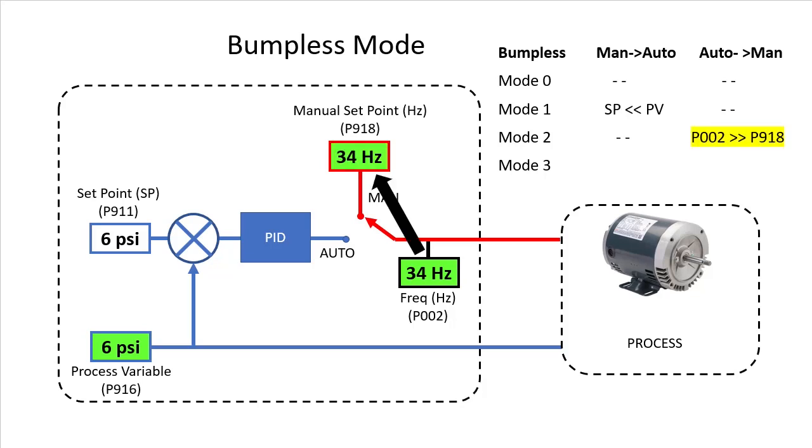Bumpless mode 2 sets the manual set point to whatever the current drive frequency is, so when you make the switch to manual mode the motor just keeps spinning at whatever speed it was already at, again preventing a sudden change.